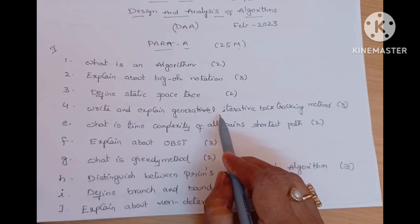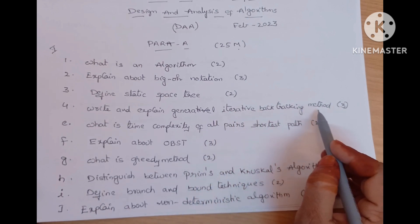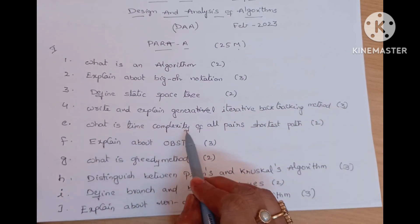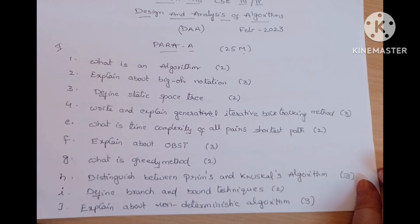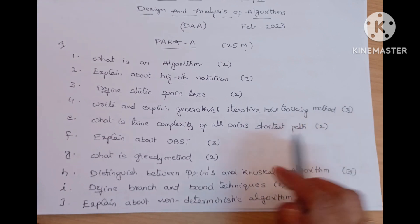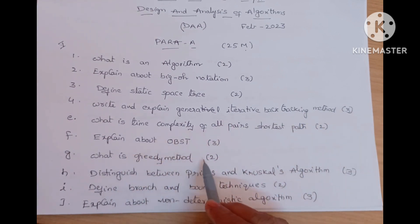Write and explain general iterative backtracking method, three marks question. What is time complexity of all pair shortest path? Two marks. Explain about OBST, three marks. What is greedy method? Just definition of greedy method, two marks.